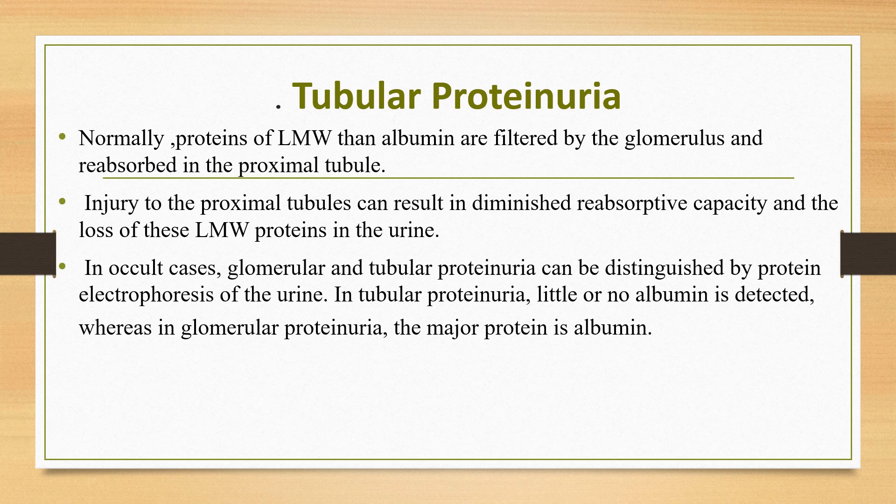Tubular proteinuria is a consistent finding among patients with X-linked tubular syndrome. Dent disease, caused by mutation in the renal chloride channel, is another tubular disorder that can cause proteinuria. Asymptomatic patients with persistent proteinuria generally have glomerular rather than tubular proteinuria. In difficult cases, protein electrophoresis of the urine can help differentiate: in tubular proteinuria, little or no albumin is detected, whereas in glomerular proteinuria, the major protein is albumin.